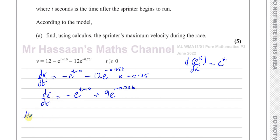So here we have the dv/dt. And we know at the maximum, we can say dv/dt is equal to 0. So we can now equate this to 0. So minus e to the power of t minus 10 plus 9e to the power of negative 0.75t is equal to 0.